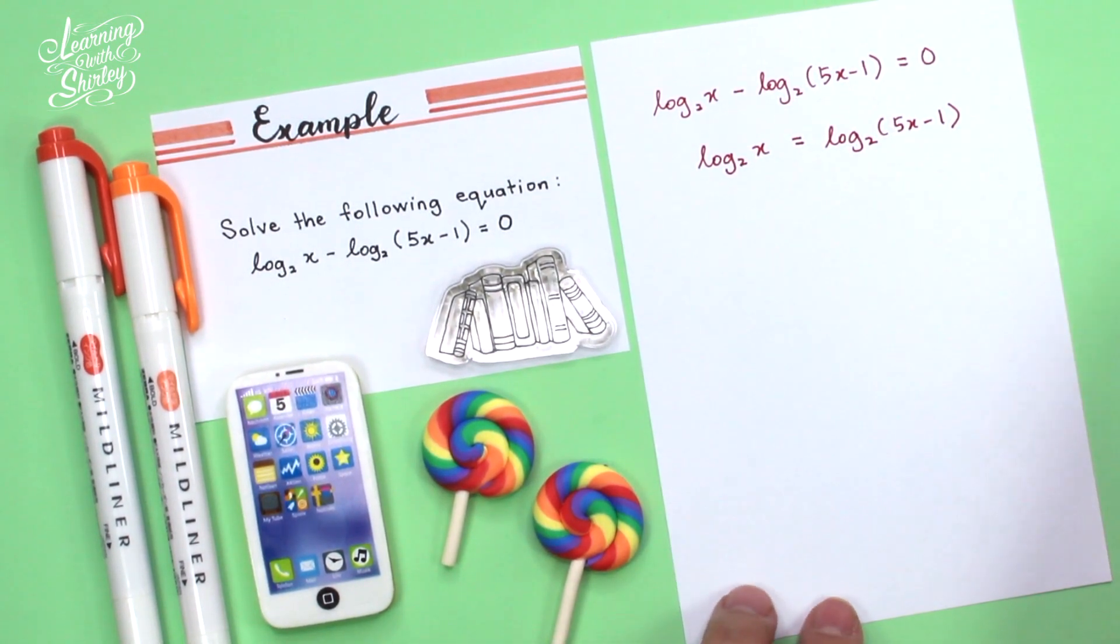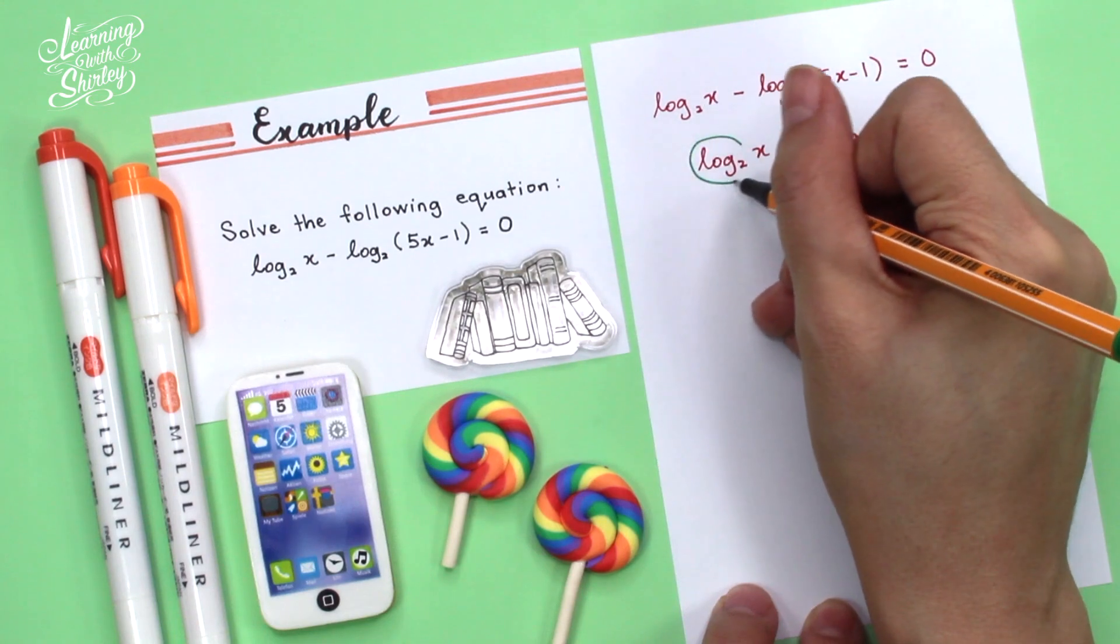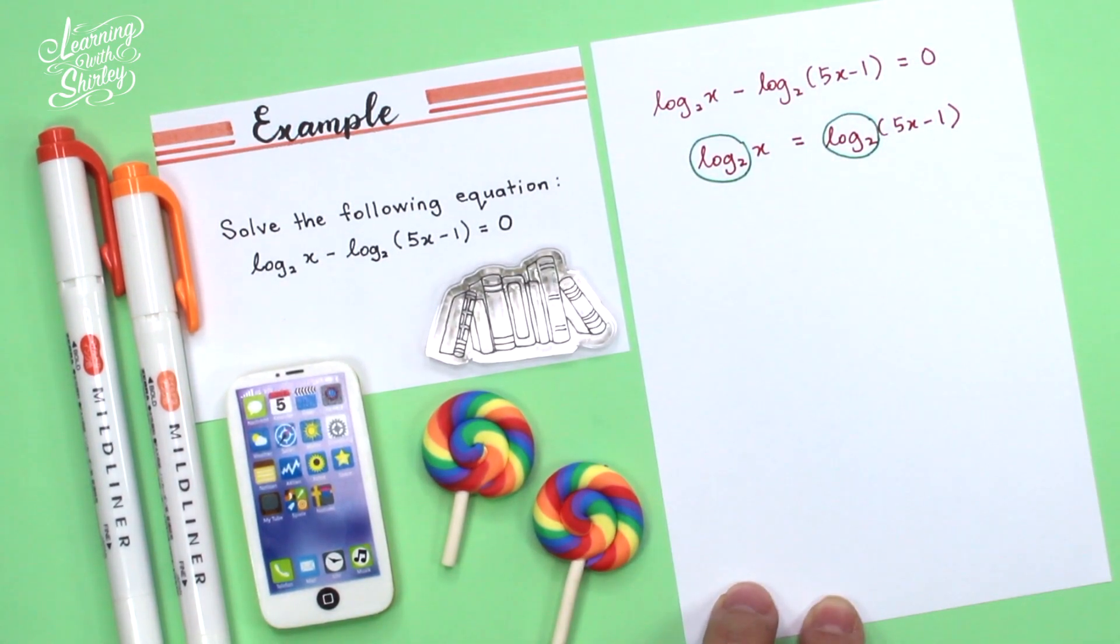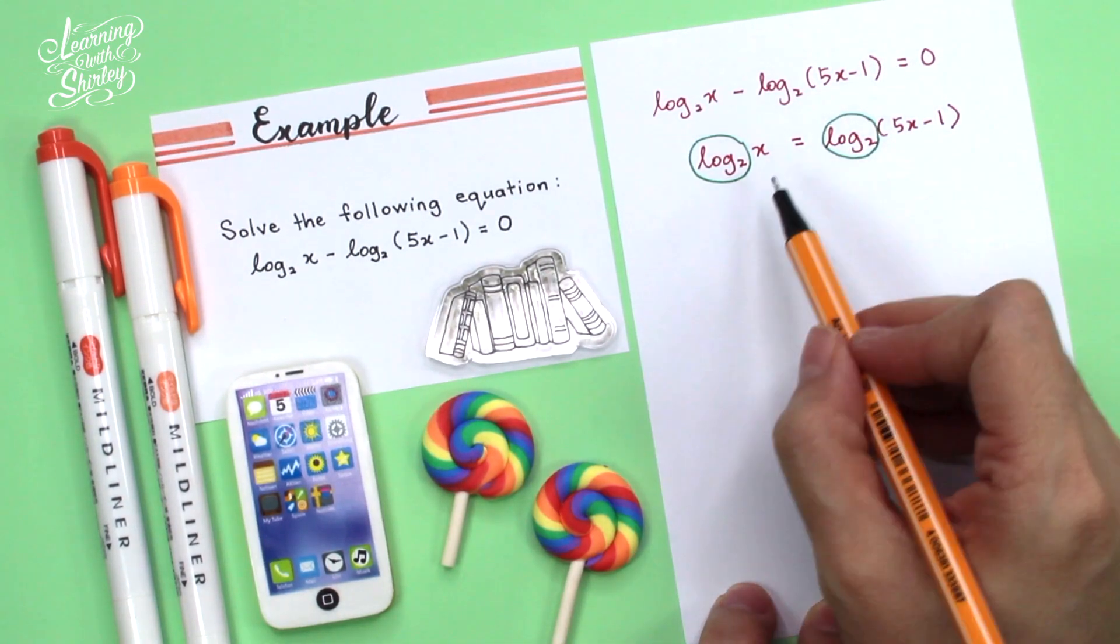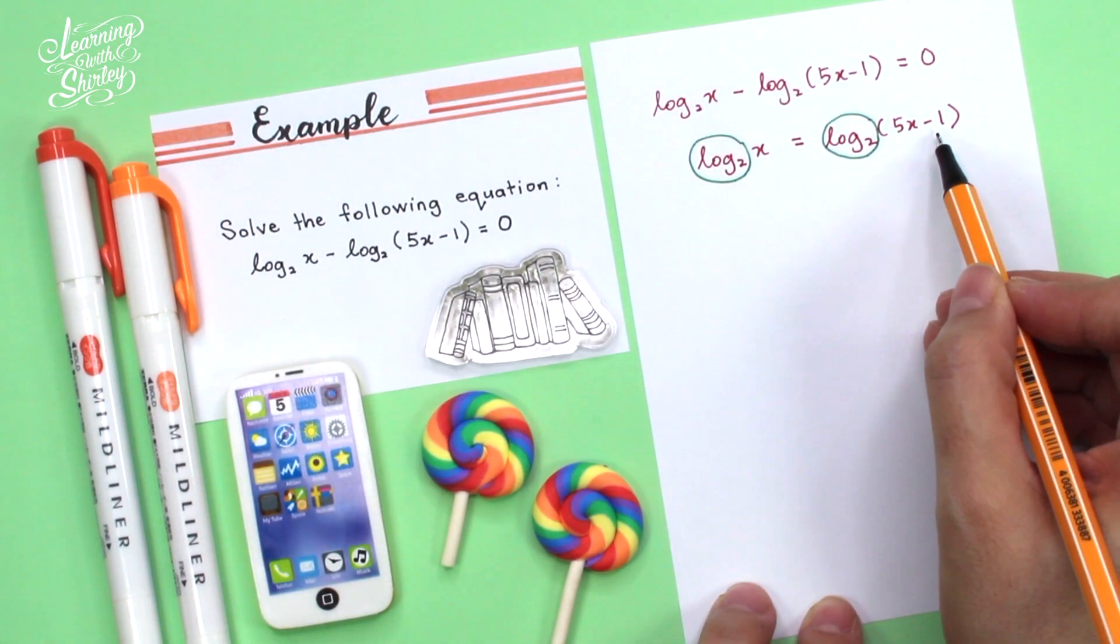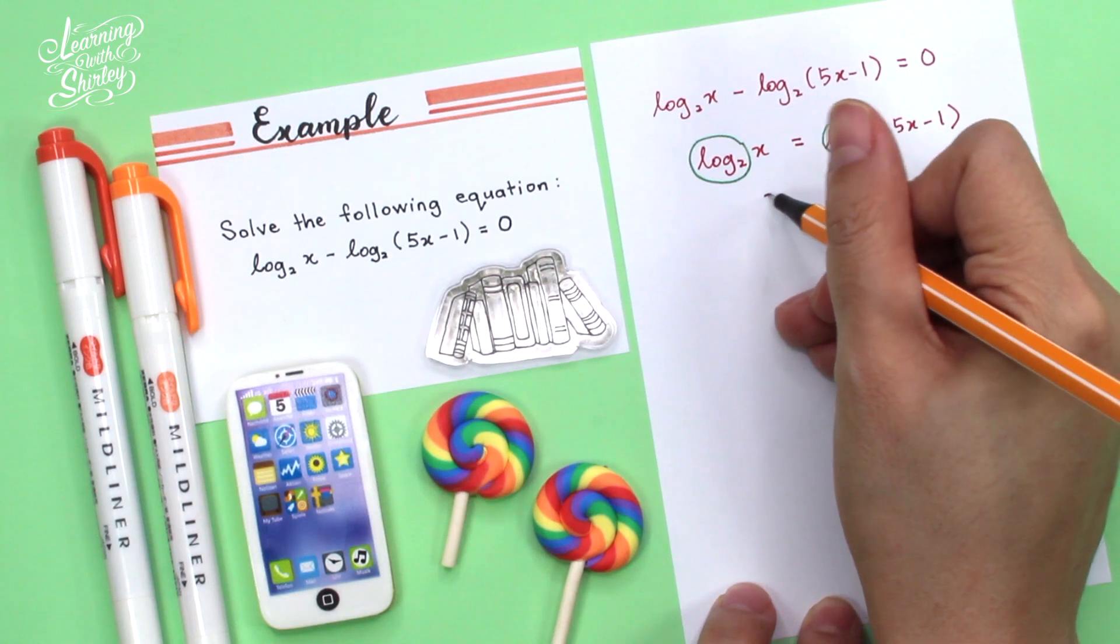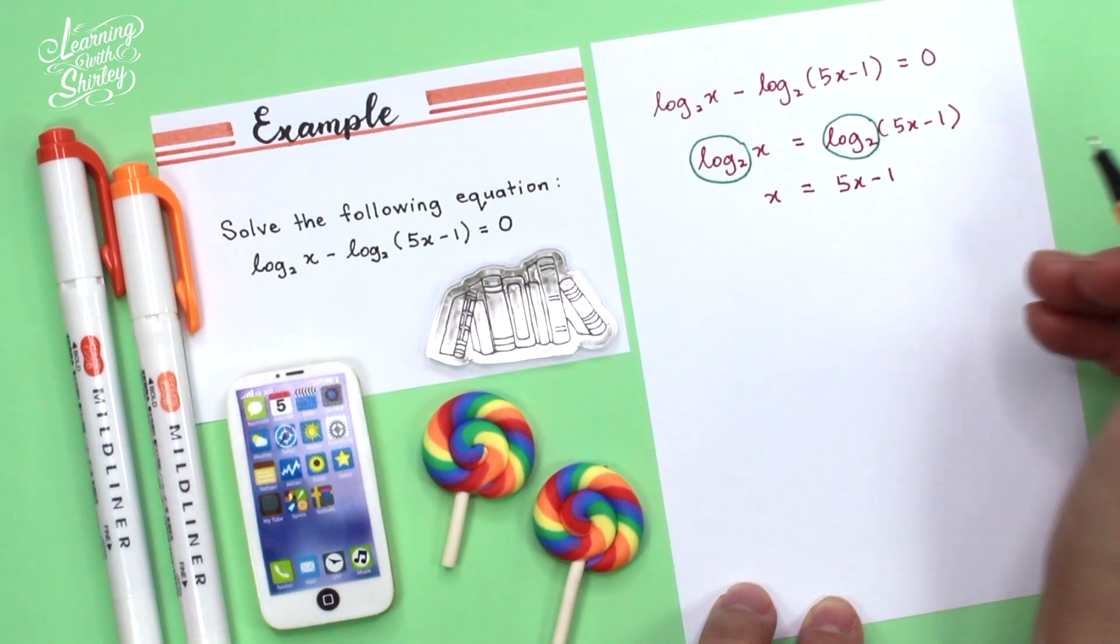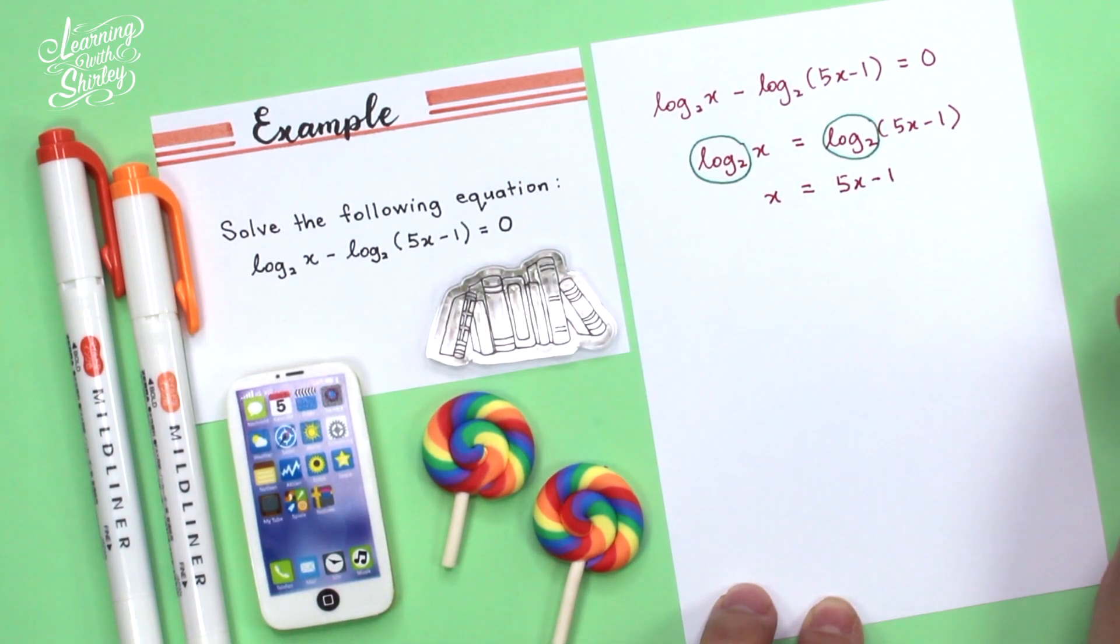And then, I'm going to compare both sides. Since both have the same log with the same base, log 2 and log 2, you can compare. So x and 5x minus 1, I will bring them down. So it becomes x equals to 5x minus 1. And then we solve this using linear equation.